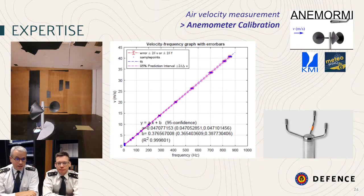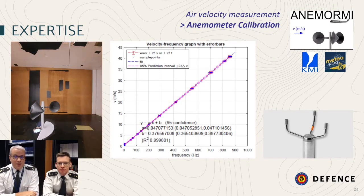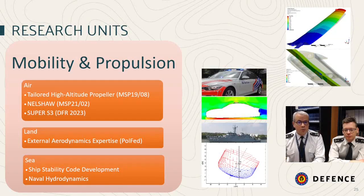In this last example, we use our wind tunnels, instruments and methodology to make the calibration of the anemometers that are used on a daily basis by the Royal Meteorological Institute and the Meteor Wing for weather forecasts. In the research unit on mobility and propulsion, we focus on air, sea and land vehicles.